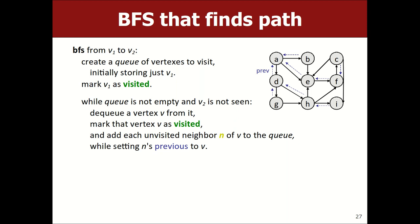A question arose about multiple possible 'previous' nodes in BFS. In this algorithm, whenever you add someone to the queue, it's as a neighbor of someone you pulled out — so you know exactly how you got there. You store that single path: 'I got to I from H.' The other possible ways to have reached I are not stored, because that's not what the algorithm found.